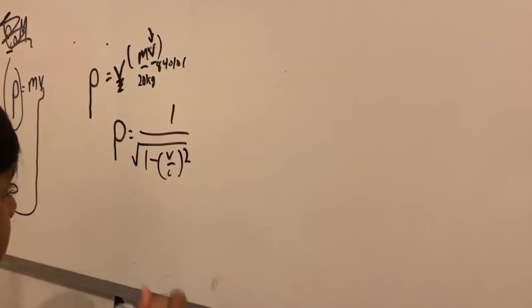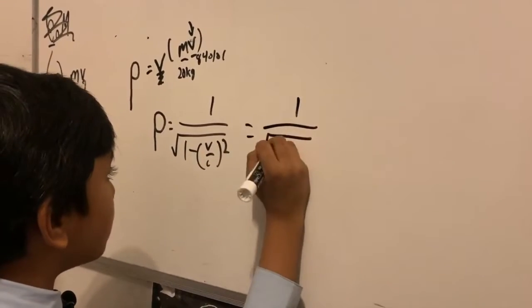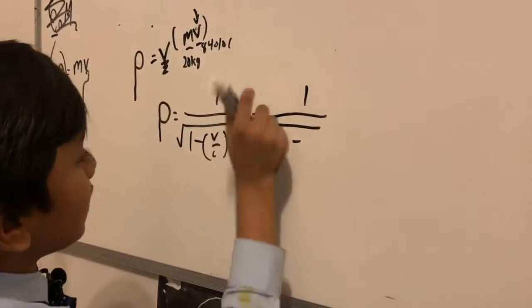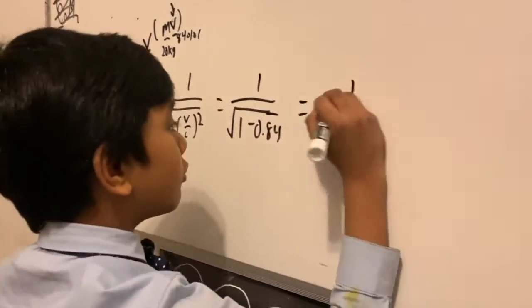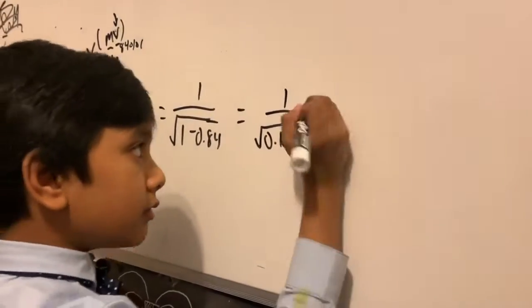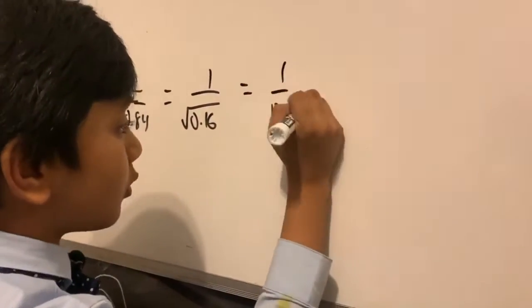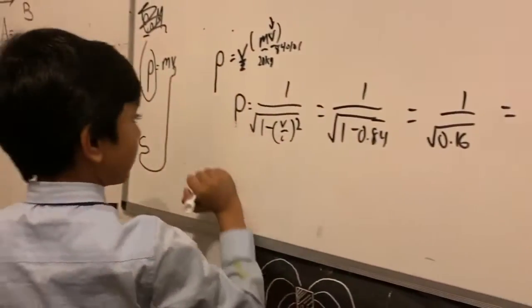Now from what I believe, that's going to be equal to 1 minus the 0.84, which is going to be equal to 1 over square root of 0.16, which is obviously going to be 1 over 0.4, or 2.5. That gives us a gamma of 2.5.